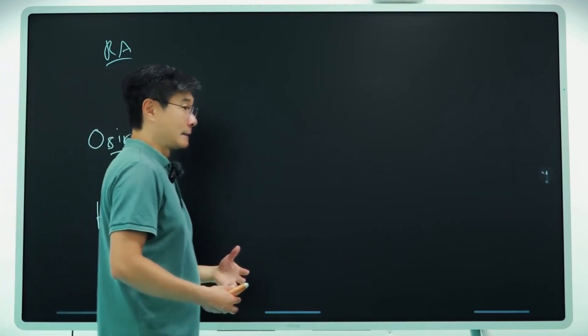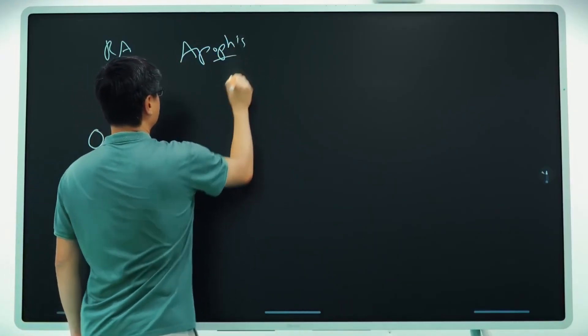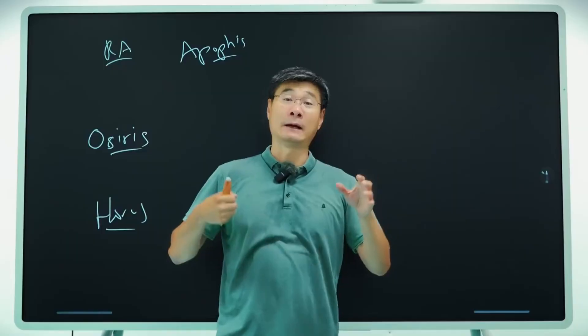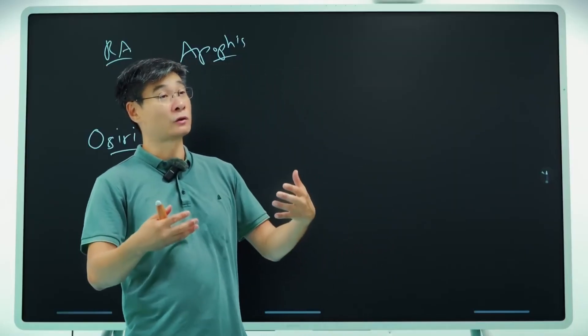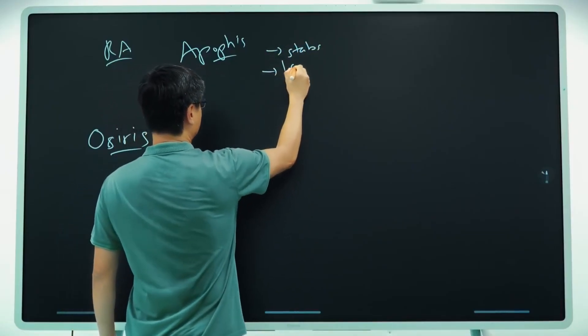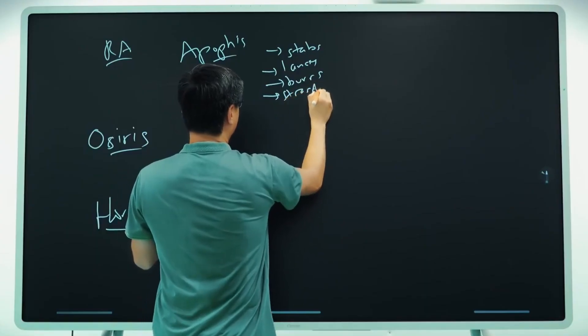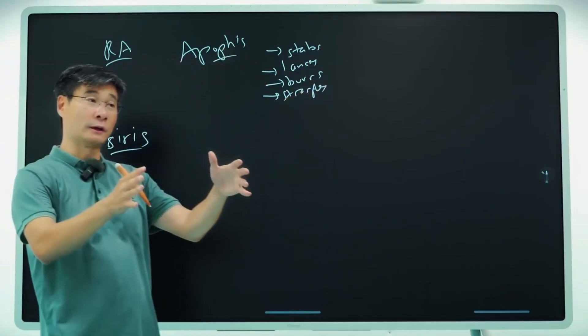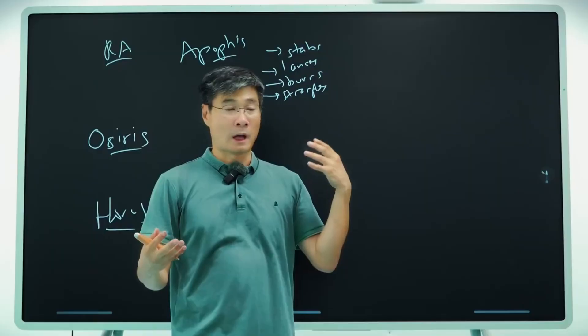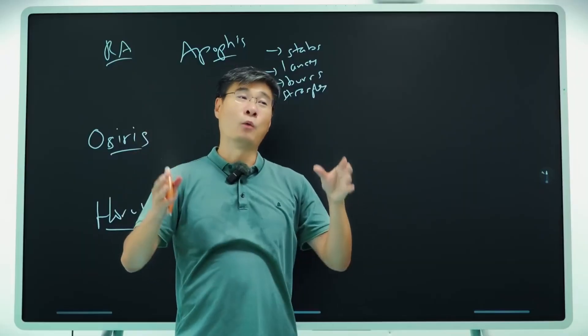So there are different stories associated with Ra, Osiris, and Horus. Ra, what he does is every night he goes into the underworld and he fights the serpent, Apophis. Every night, Apophis, the serpent, he's trying to swallow the sun to prevent the sun from rising. So Ra must kill him every night. And there are different ways that he kills Apophis. Sometimes he stabs Apophis with a knife. Sometimes he uses a lance. Sometimes he burns Apophis. Sometimes he strangles Apophis. But there are different ways that he kills Apophis. But rest assured, he kills Apophis every single night so that the sun can rise in the morning.